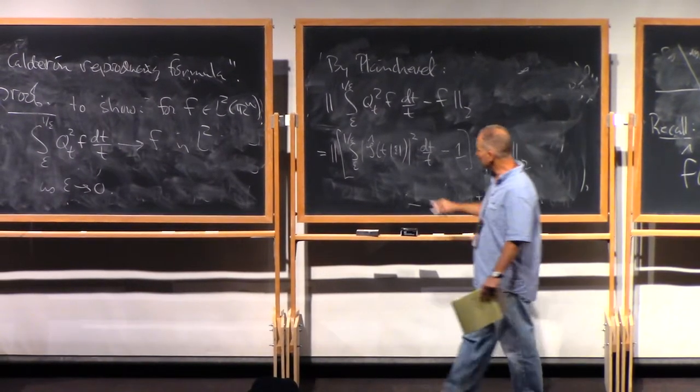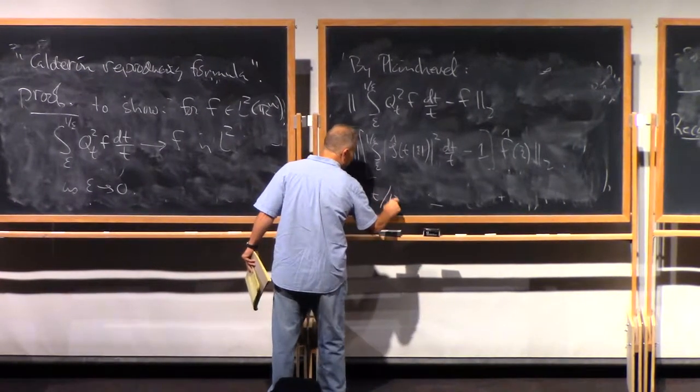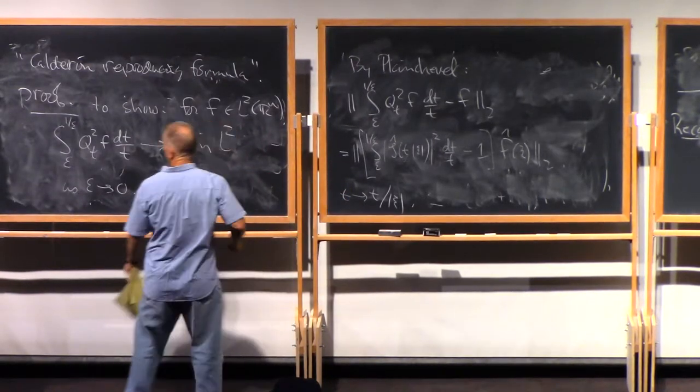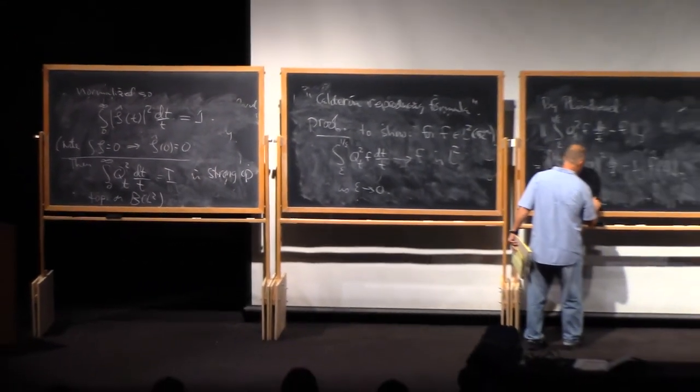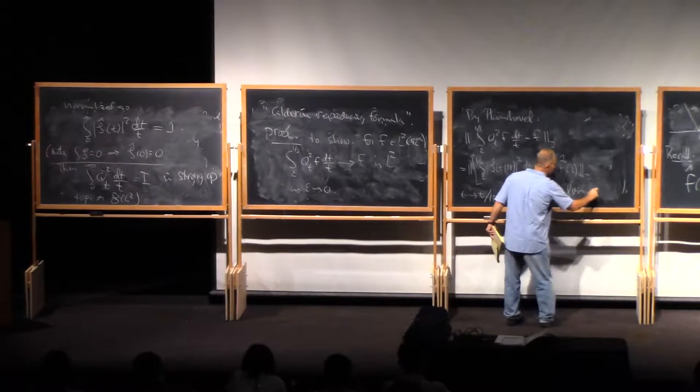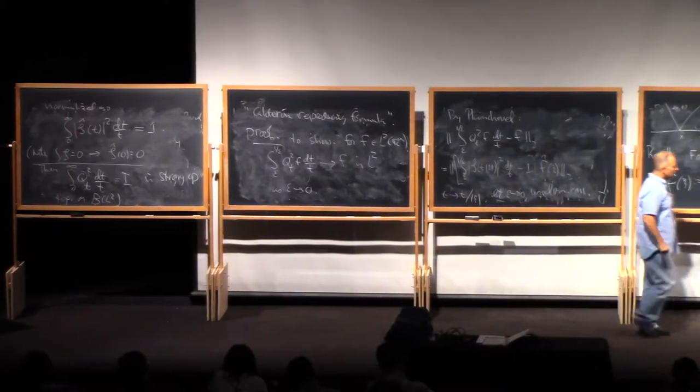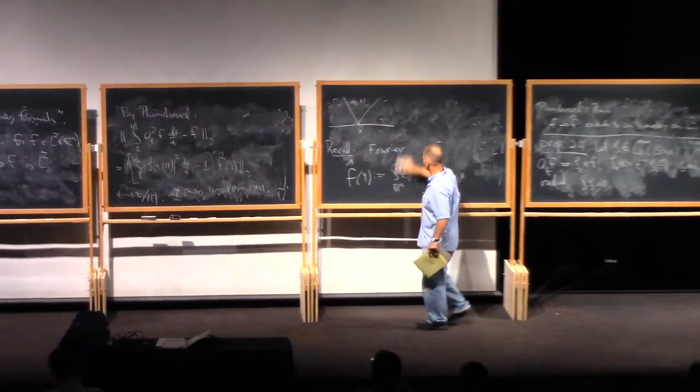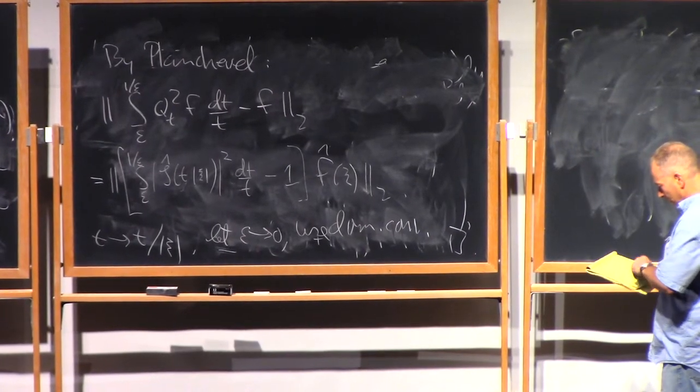Then we have dt over t minus 1 times f hat in L2. But now you just, here, make the change of variable. t goes to t divided by mod xi. And then let epsilon go to zero and use dominated convergence along with this fact. And then you're done.